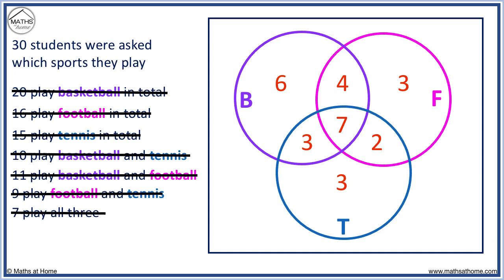We don't have 30. We need 2 more. These 2 students go on the outside of all the circles because they do not play the 3 sports of basketball, football, or tennis.